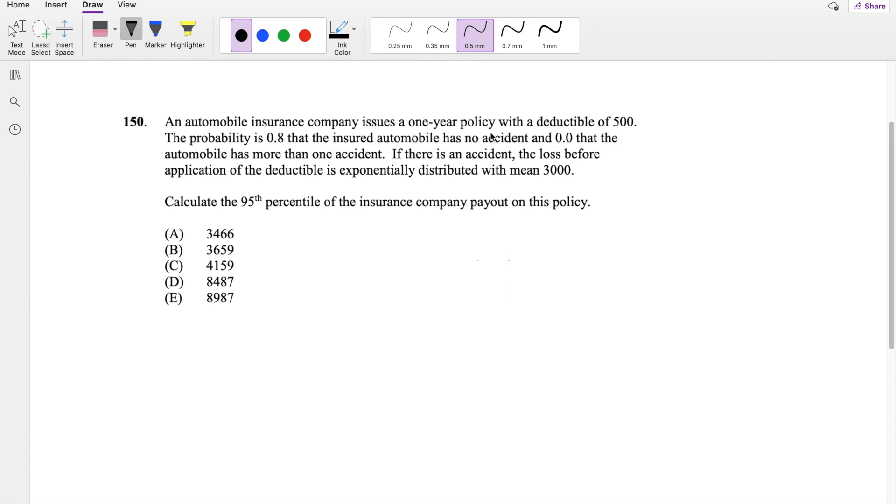An automobile insurance company issues a one-year policy with a deductible of 500. The probability is 0.8 that the insured automobile has no accident. So this part, no accident, is 0.8.